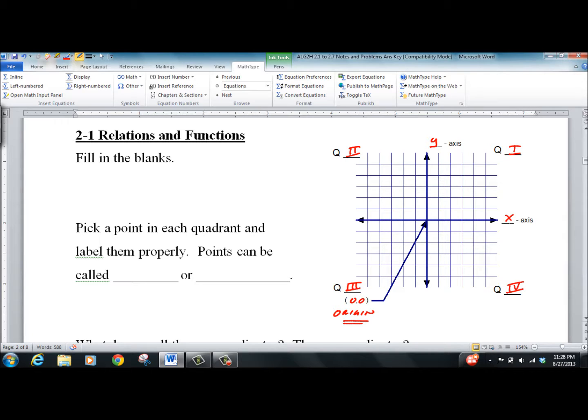We have two ways we can call these points. We can call them coordinates or ordered pairs.